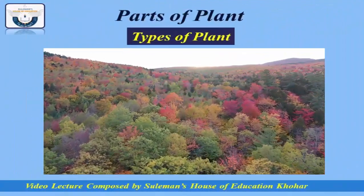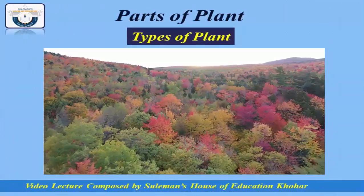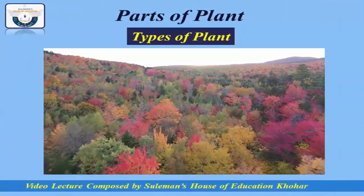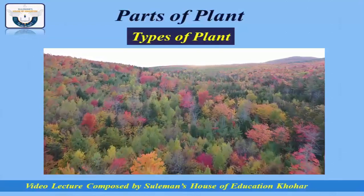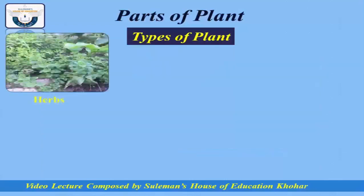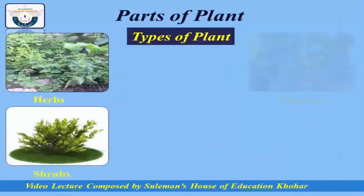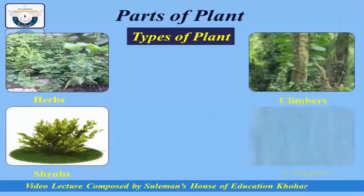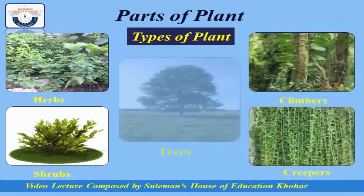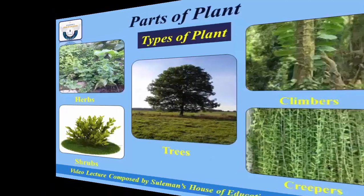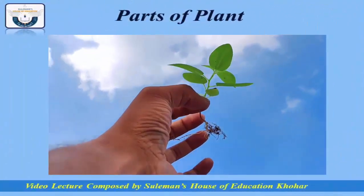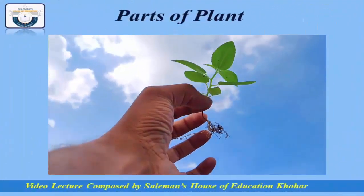Plants have many types, but here we will see a few of them. The major types of plants are as follows: herbs, shrubs, climbers, creepers, and trees. These five types are generally regarded as the major types of plants.